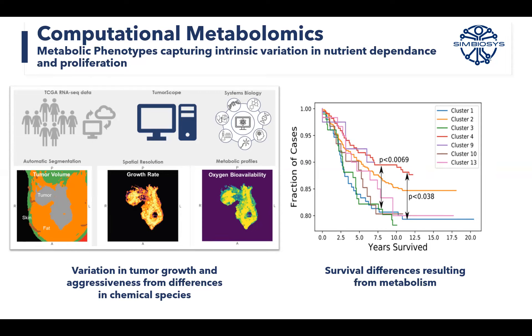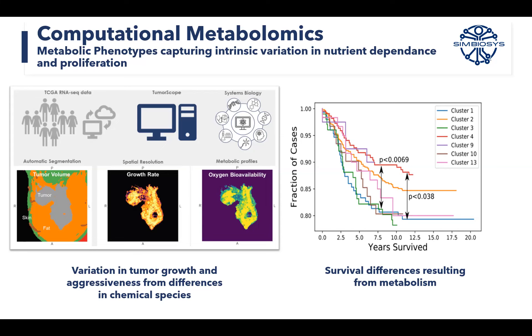We capture that sensitivity from genomic data, and then we have a spatial 3D model that says how different is it, where are the blood vessels and where are these metabolites going to go, in order to be able to answer that question.